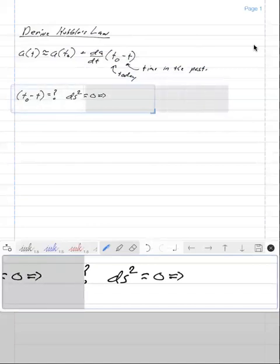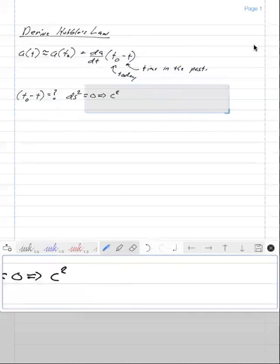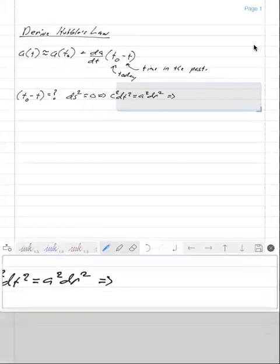We looked at this once before. So this is c squared dt squared equals a squared dr squared. That's what that leads to.